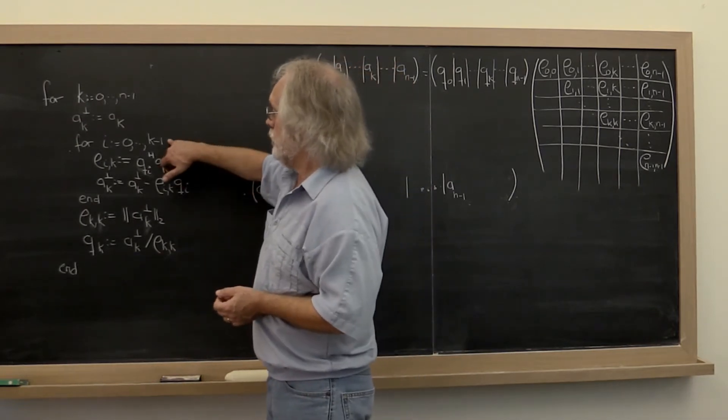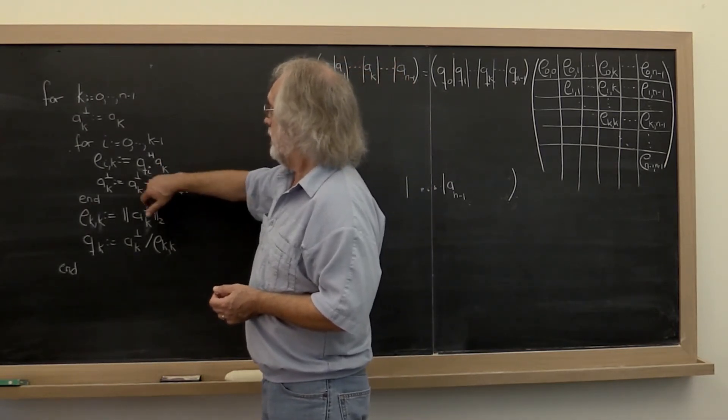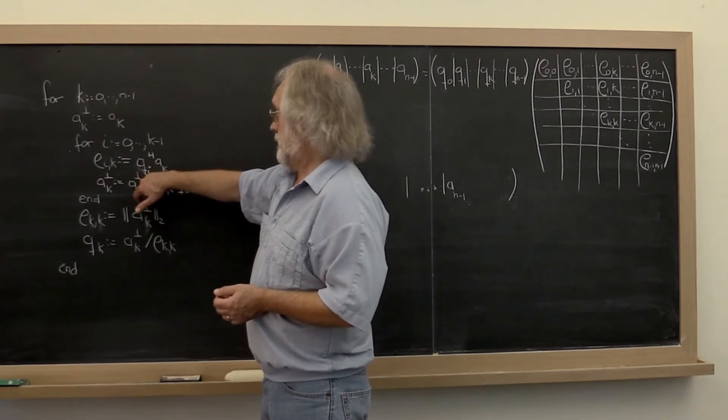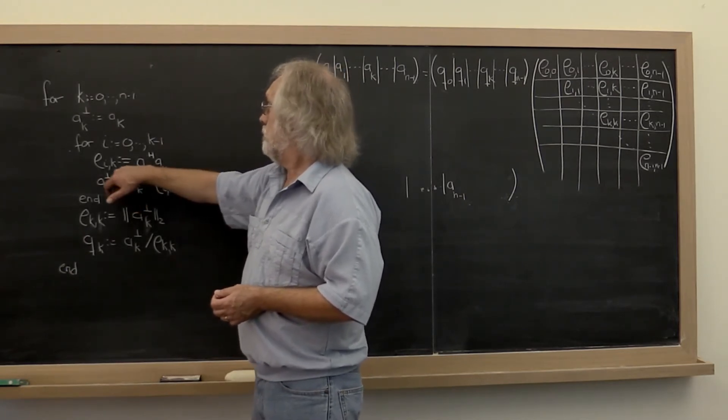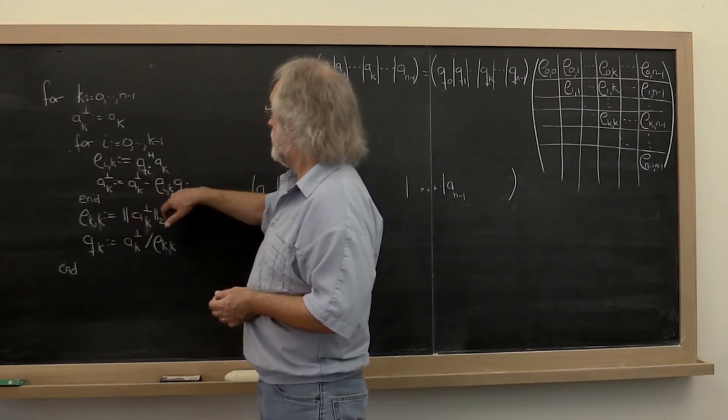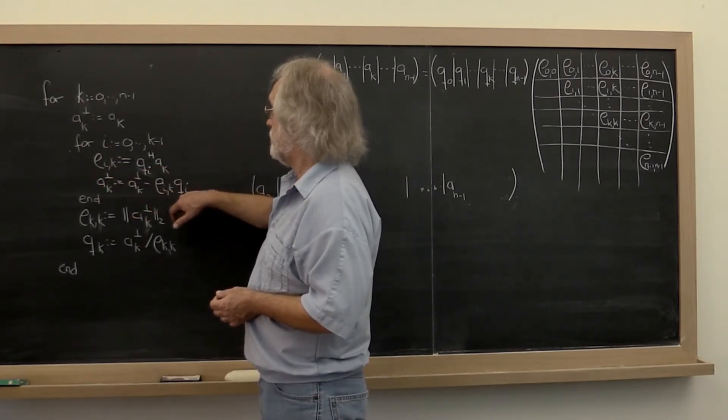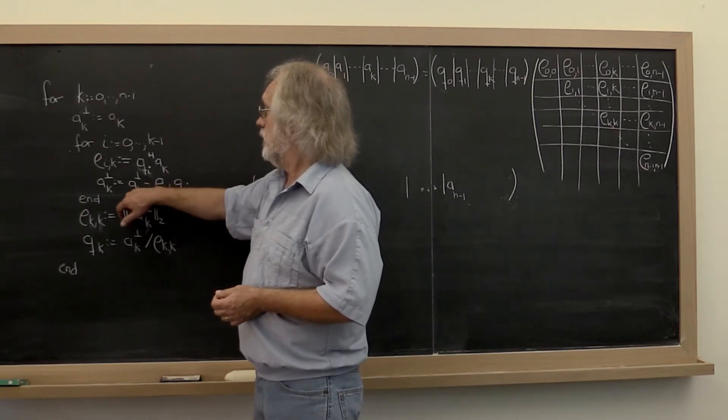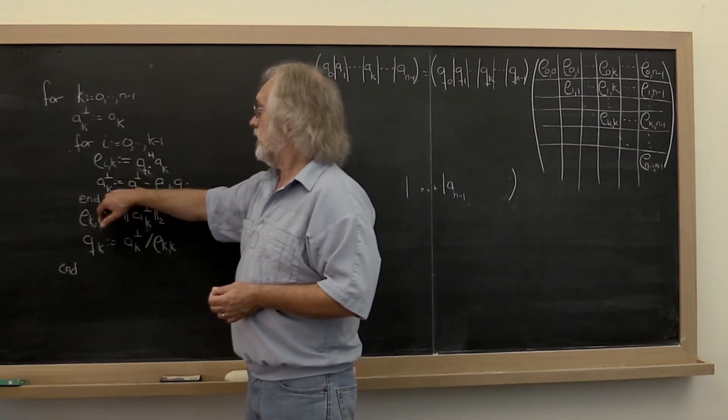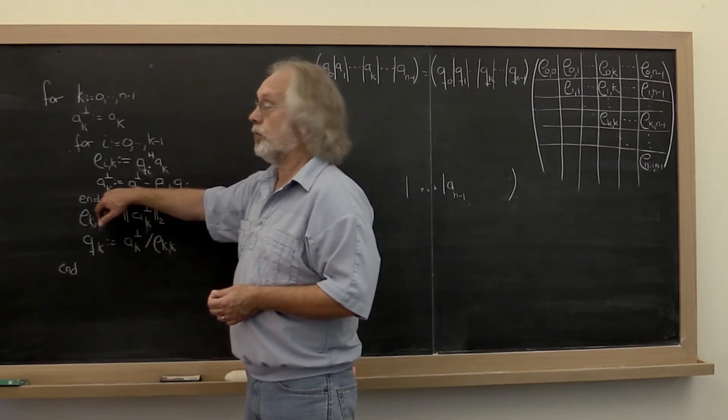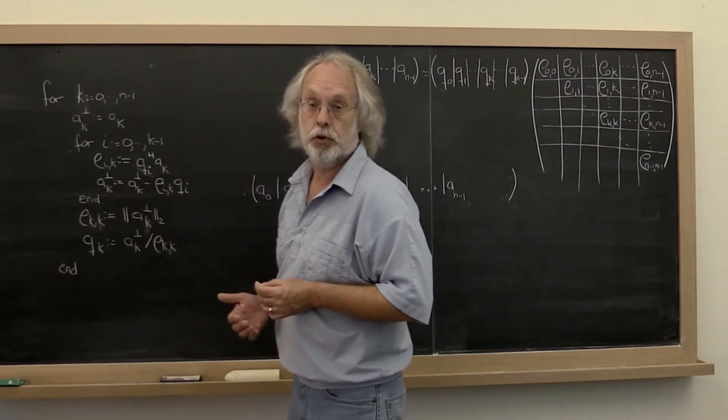And then what we do is we loop through and for each previous vector qi, we compute the coefficients and then we subtract out the component in the direction of that vector so that eventually when we're done with this loop we're left with the component orthogonal to what had been computed previously.